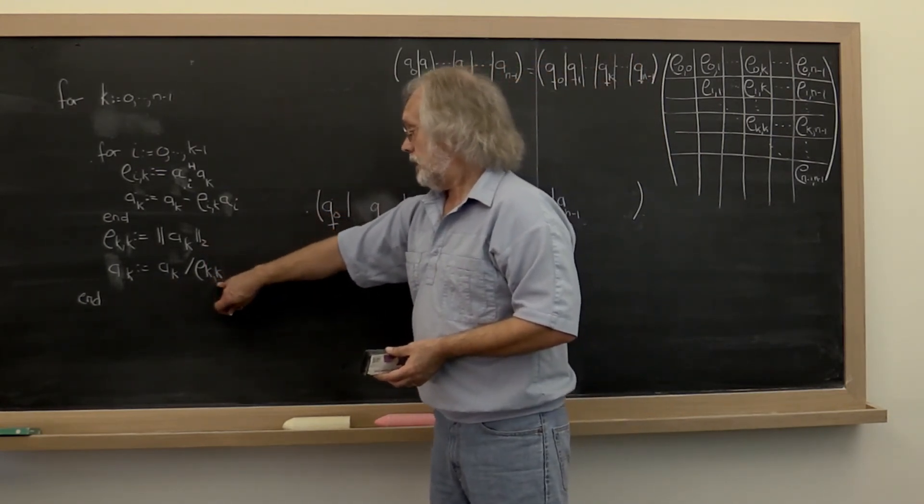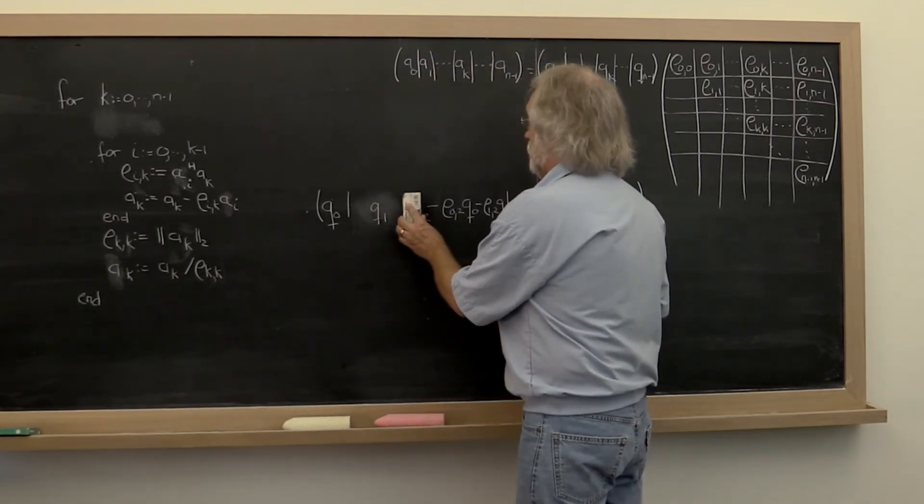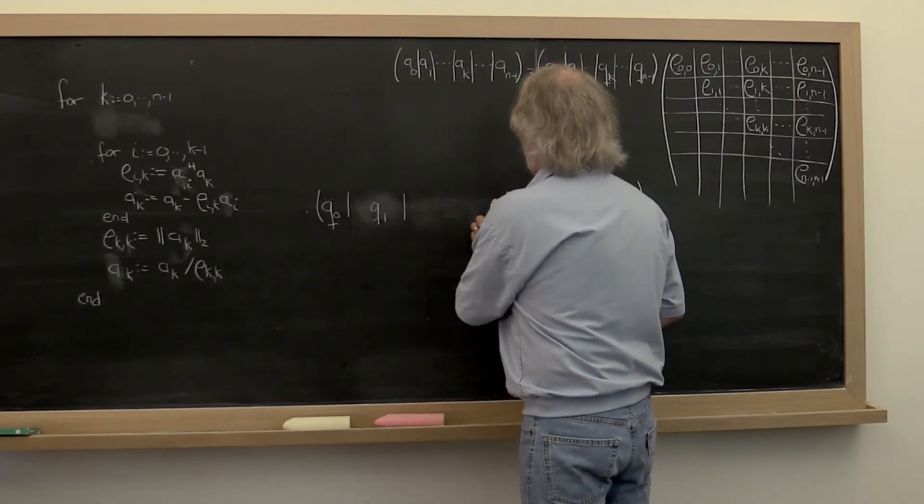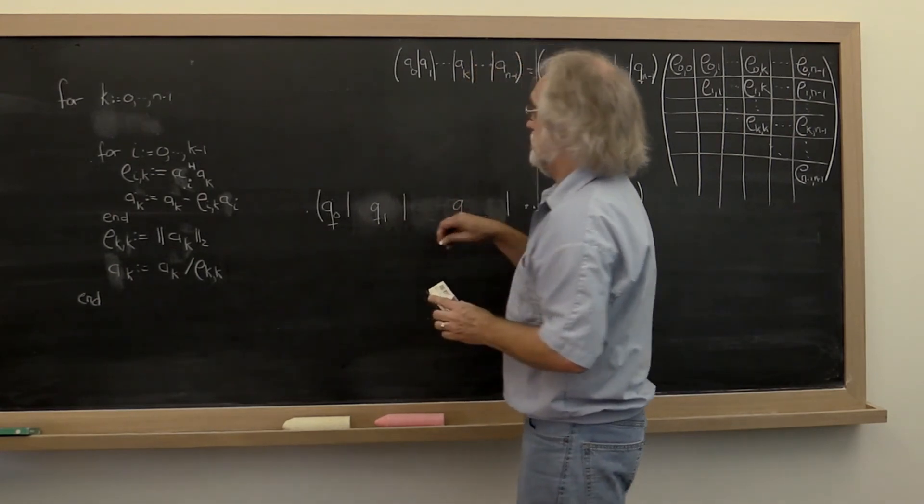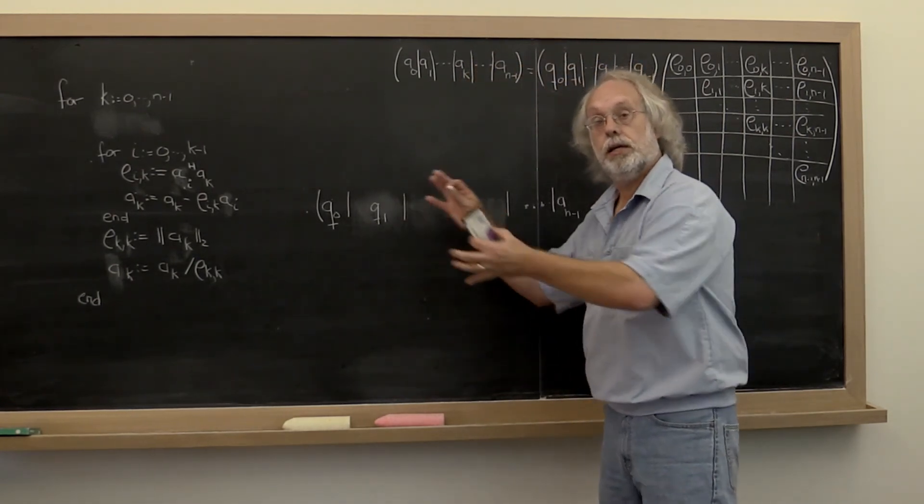We compute its length. And we divide by that length. And at that point we have q_2 sitting in the third column. And then we move on.